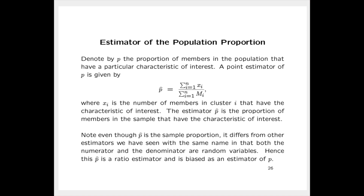A point estimator of p is given by the expression on slide 26. It's the sum of the x sub i's divided by the sum of the cap M sub i's. The x sub i's represent the number of members in cluster i that have the characteristic of interest. So the numerator—the sum of the x sub i's—is the total number of members in the entire sample that have the characteristic of interest. Thus p-hat is the proportion of members in the sample that have that characteristic.